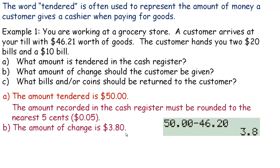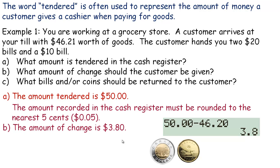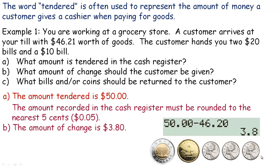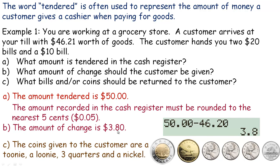To make $3.80 in change, start with a toonie — two toonies would be too much at $4.00. Add a loonie, so that's $3.00. Now to make the 80 cents: add three quarters (75 cents) and a nickel (5 cents). The coins given back to the customer would be a toonie, a loonie, three quarters, and a nickel — that makes $3.80.